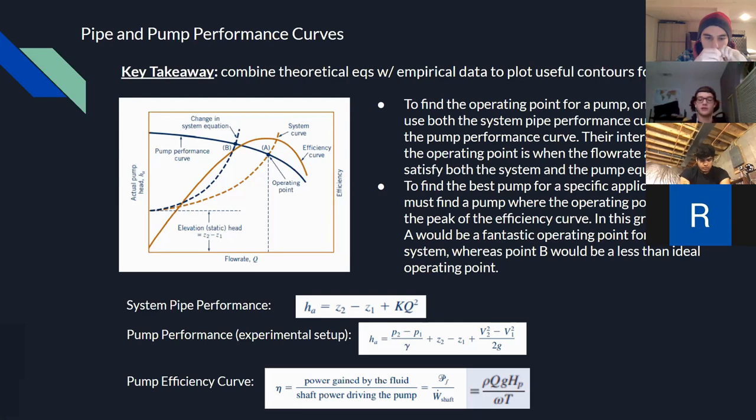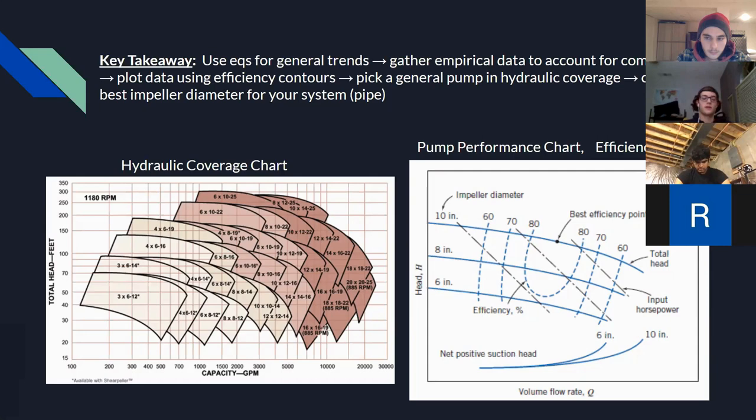To find a pump for a specific application given head and flow rate, we can use the hydraulic coverage chart to find the size of the pump needed, and then we can use the pump performance chart as a zoom-in tool to find the size of the impeller blades for that specific application.